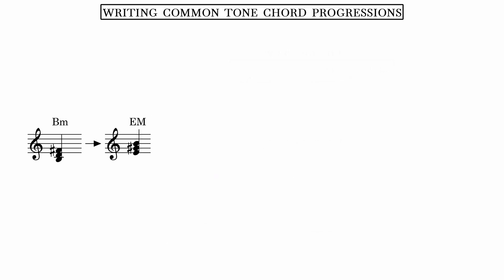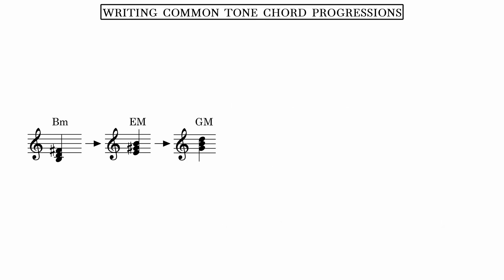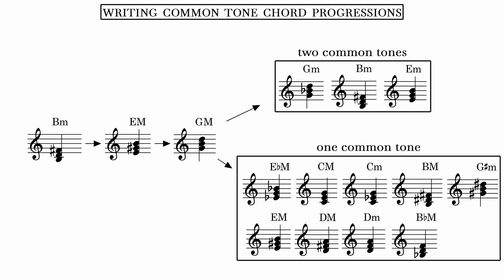From B minor I can pick chords that share two common tones, or chords that share just one. I'll pick E major. From there I do the same exact thing, looking at common tone chords from E major. Returning to B minor would be an option, but I'd rather not repeat any chords. I'll choose G major. At this point I want two more chords, and I want the last chord to lead back into the first, so I have to keep that in mind. I'll go ahead and play each option, because this is a crucial moment in the progression.